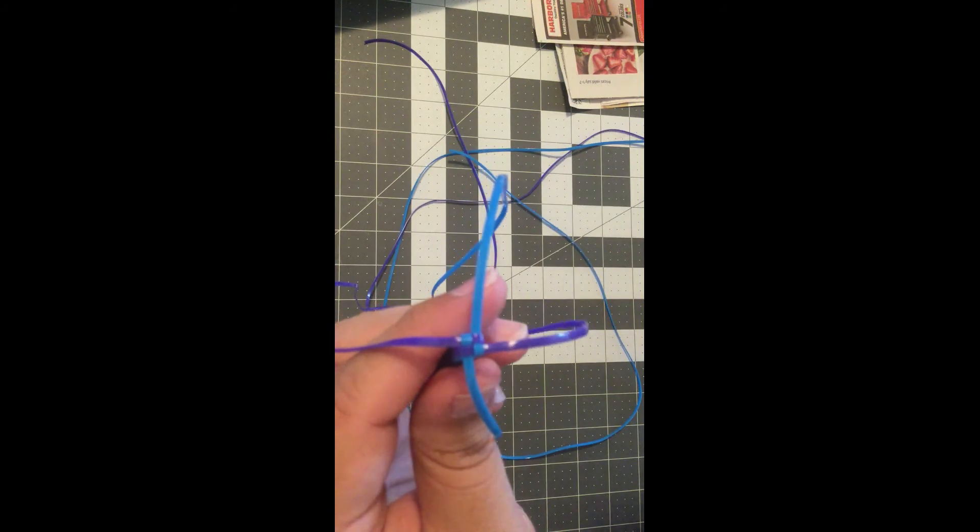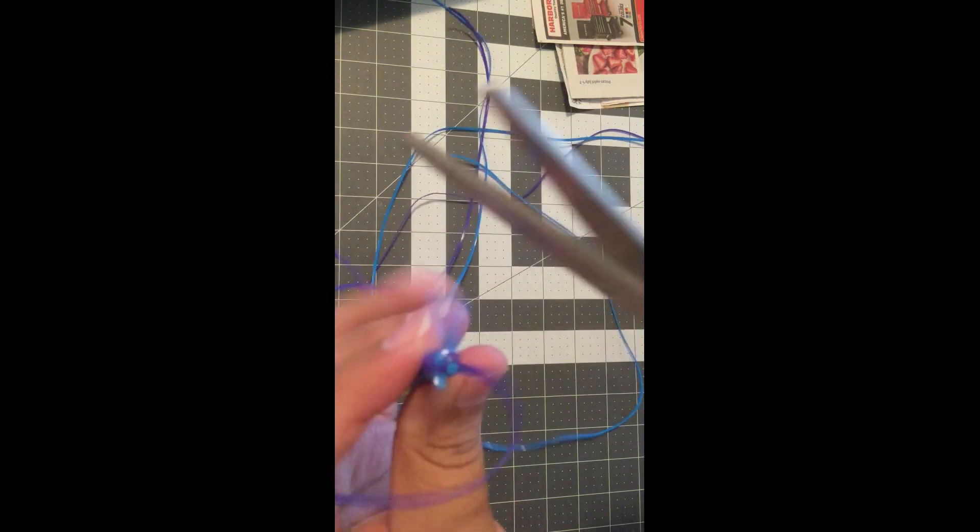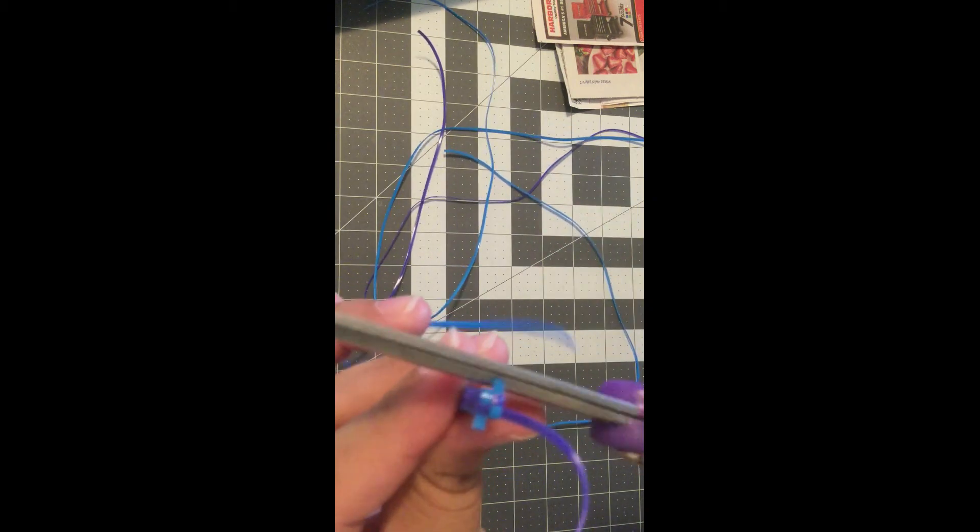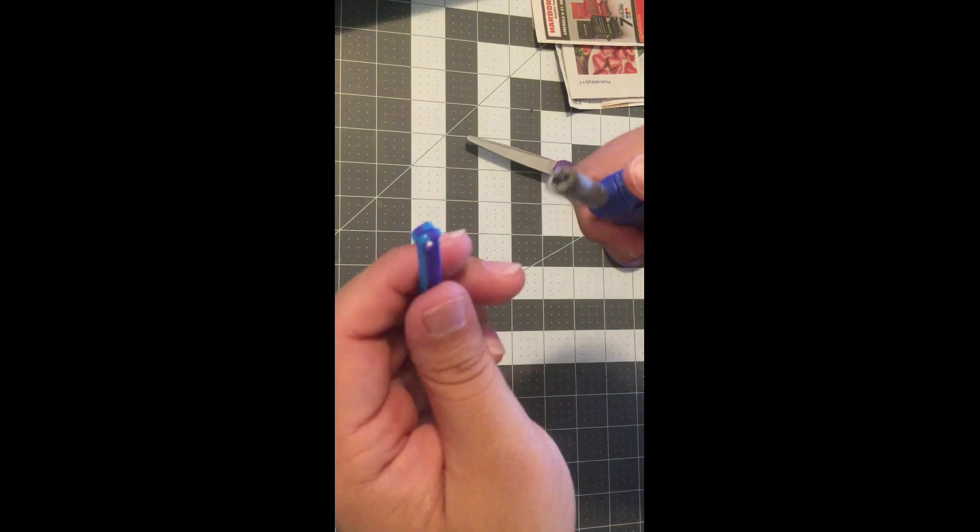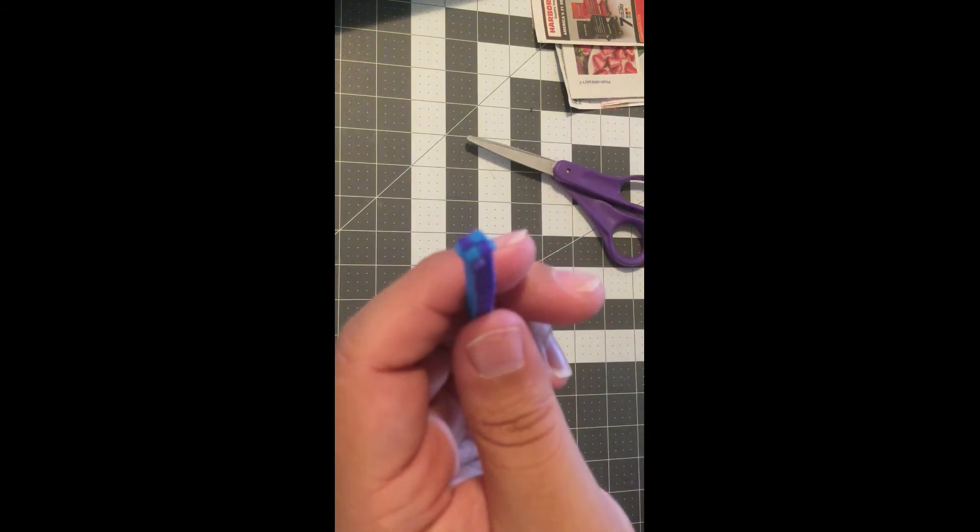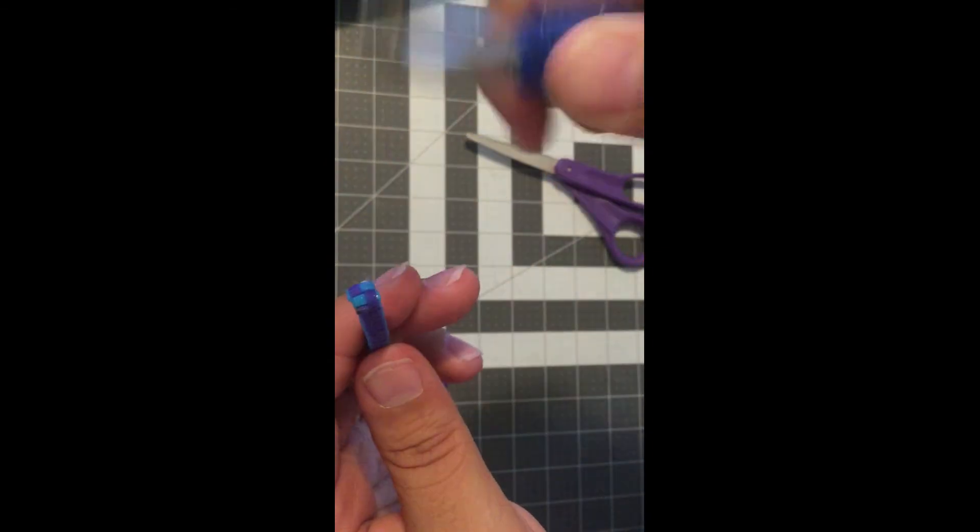Once you're done with your layers, you will cut the cords as short as you can. Please ask your parents to help you burn the ends of your cords. We do this so that the plastic melts to itself and it closes off our lanyard.